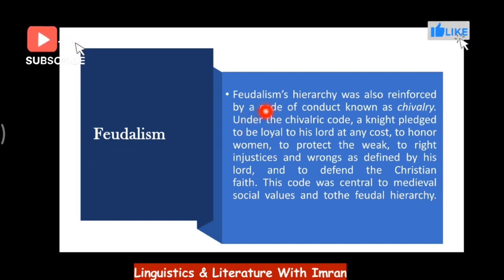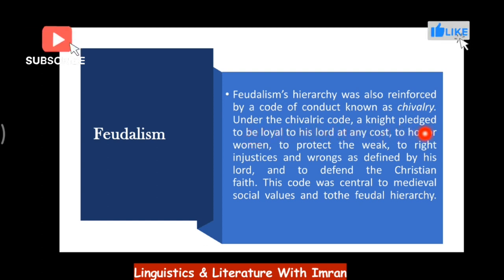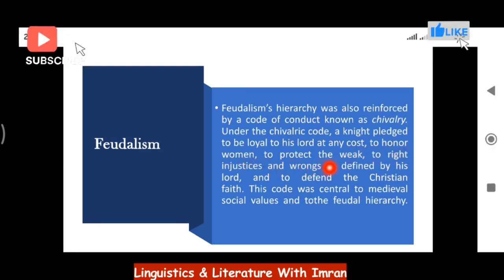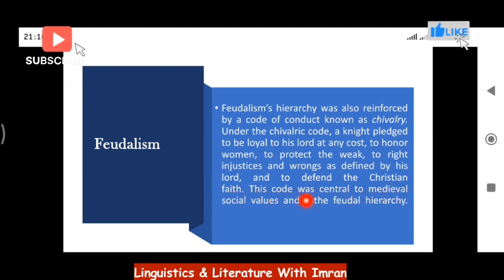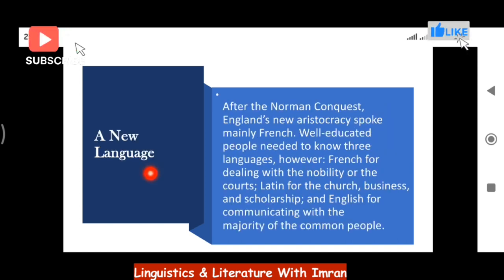Feudalism's hierarchy was also reinforced by a code of conduct known as chivalry. Under the chivalry code, a knight pledged to be loyal to his lord at any cost, to honor women, to protect the weak, to right injustice as defined by his lord, and to defend the Christian faith. This code was central to medieval social values and to the feudal hierarchy.